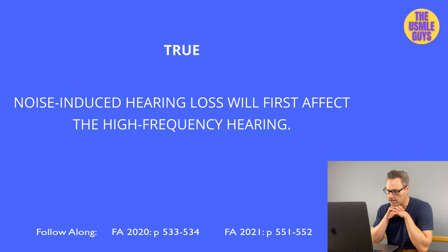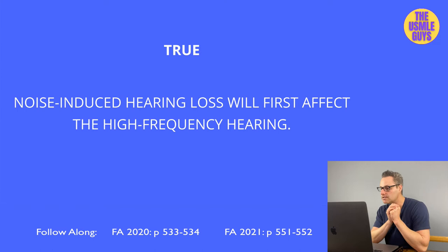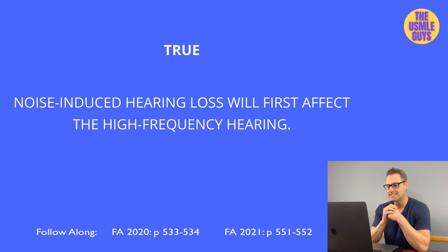This is true. There are two main types of hearing loss: noise-induced hearing loss and presbycusis. In noise-induced hearing loss, there's damage to stereociliated cells in the organ of Corti, and high-frequency sounds are the first to go — not necessarily bilateral. In presbycusis, we see progressively worsening sensorineural hearing loss that is bilateral and symmetric.